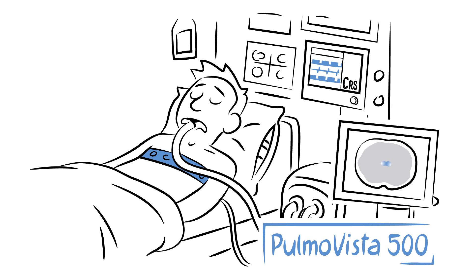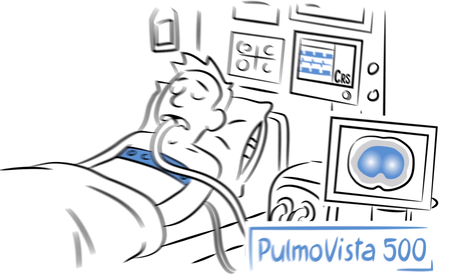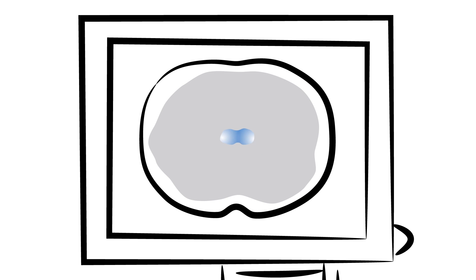PulmoVista 500 makes ventilation visible. PulmoVista 500 shows how the tidal volume is distributed within the thorax and visualizes changes in end expiratory lung volume.